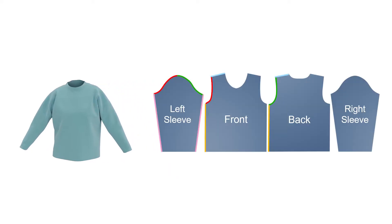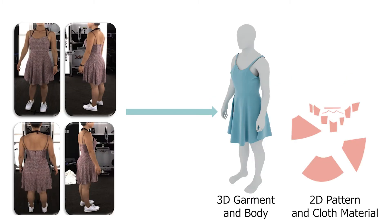Real garments are defined in terms of their pattern and fabric material, which, when sewn together, produce the ready-to-wear clothing item. It is our goal to recover these patterns and material properties such that we can produce these garments in a physically correct way.